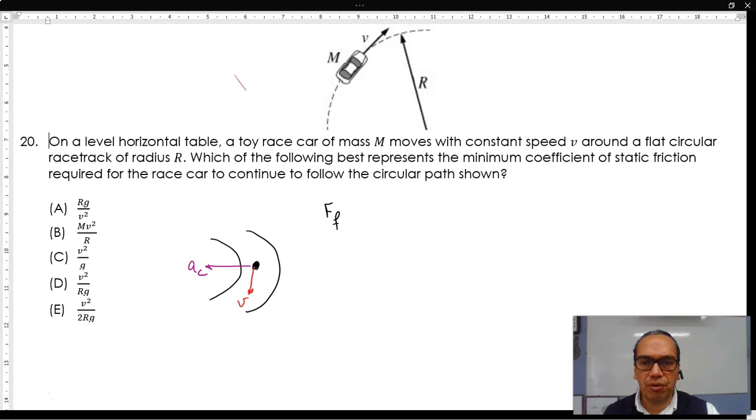So it is our friction force that acts as the centripetal or net force on this object. Now, if we are talking about the minimum coefficient of static friction, it means that this is the maximum value for the static frictional force, which is equal to mu s, the coefficient of static friction, times the normal force.